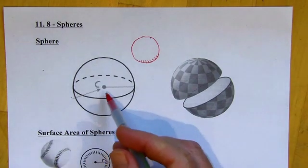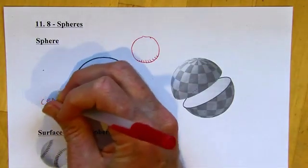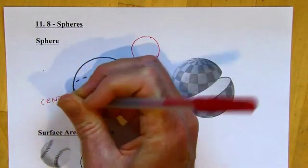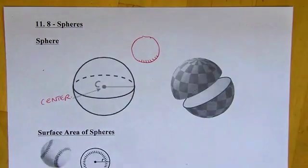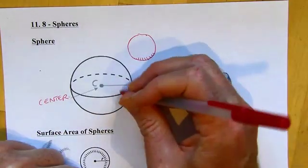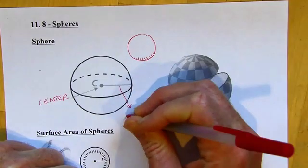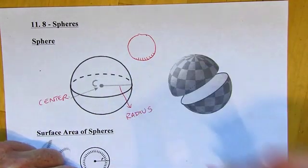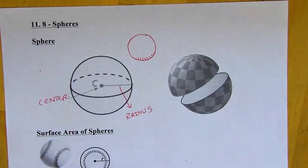Point C is the center. This has a center just like a circle would. It's just the point at the middle, the point that's equidistant from all the points on the outside. And then it also has a radius. It's still just the distance from the center of the sphere to any point on the outside of the sphere, just like it would be for a circle.